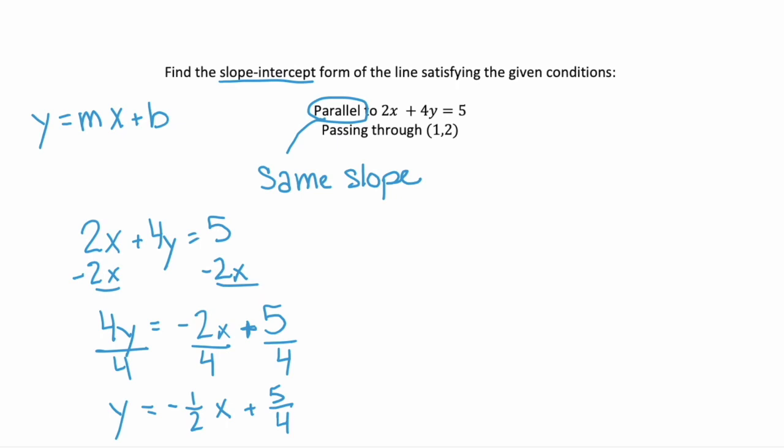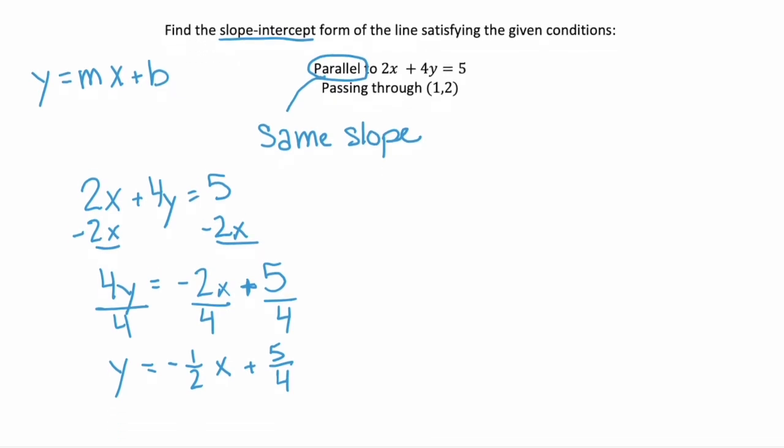Well, we don't really care about the 5 fourths because we just need the slope because our new equation will have the same slope. So our slope is negative 1 half. So our new equation is going to be y equals negative 1 half x plus b.